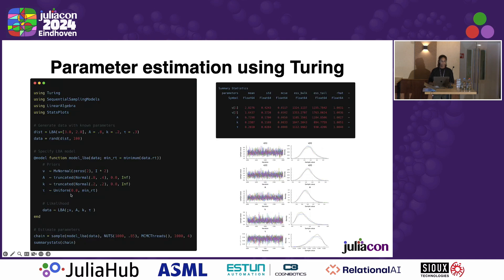It also works with Turing. Here I'm just showing a little example using the model macro to specify, in this case, the LBA, and then just sample it and show you can get recovery for the parameters for this model.